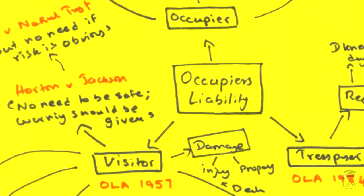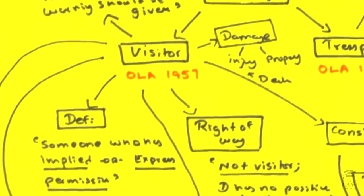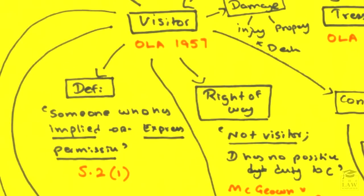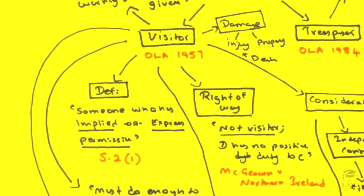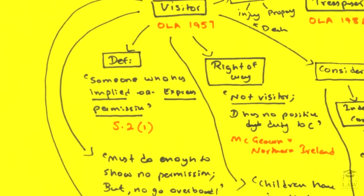We will first look at the visitor. According to Section 2.1 of the Occupier's Liability Act of 1957, a visitor is someone who has implied or expressed permission to be on the premises. It is important to note that this permission or authority must be provided by the occupier. While there is no specific definition of an occupier in the Act itself, it is wise to consider what was stated in Harris v Birkenhead — a person who has sufficient control of the property.